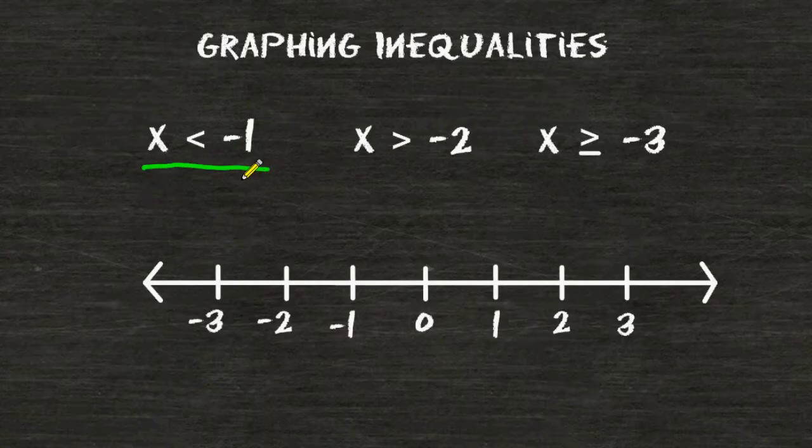First we have to locate negative 1 on our number line, which is located right here. And when you locate that number you have to draw a circle directly over that number.